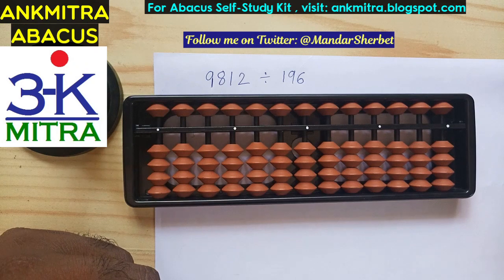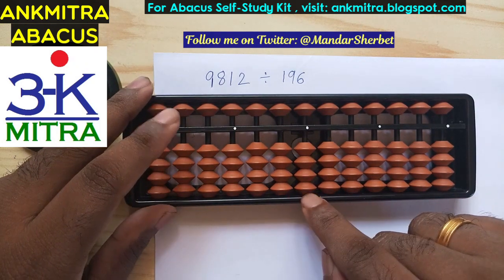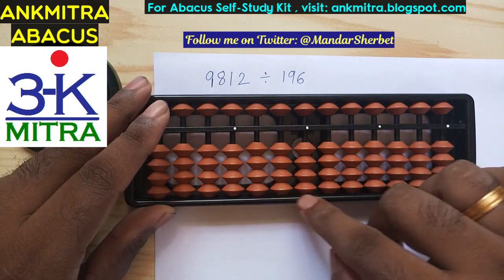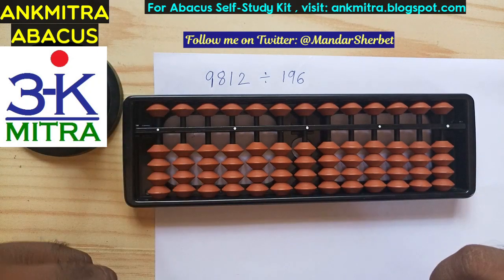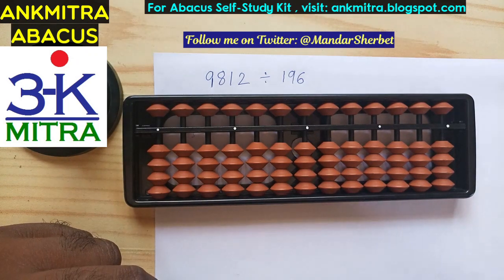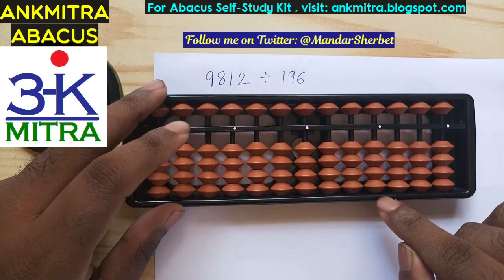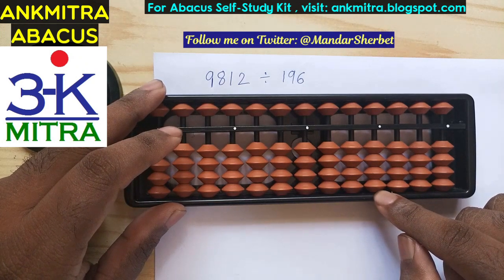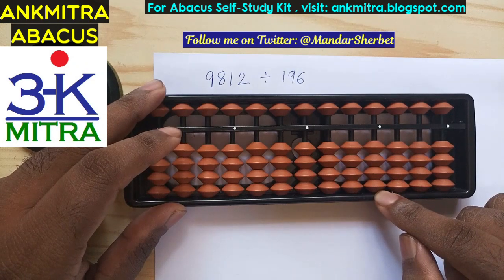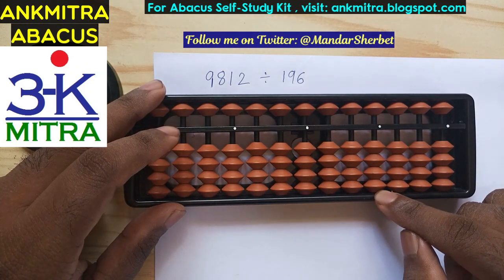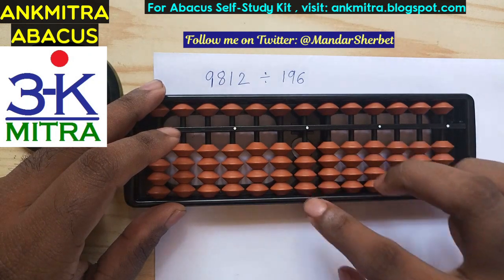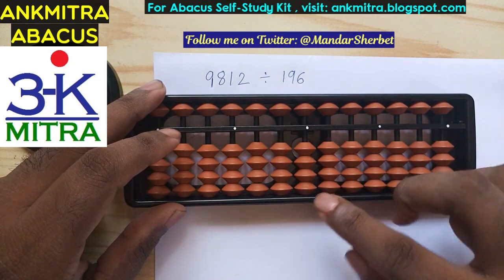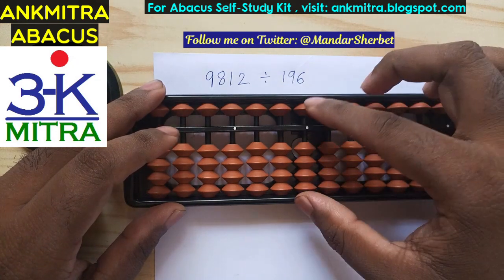As we know from my previous division videos, we take two sets on the abacus. One is the main answer set, where this becomes the units place of our answer — this is the region where we will have our final answer. The question set, that is the number to be divided, is also taken on the abacus. This I will consider as the units place of the question set. Since we have a four-digit dividend — 9812 — it will start from the thousands place of the question set.